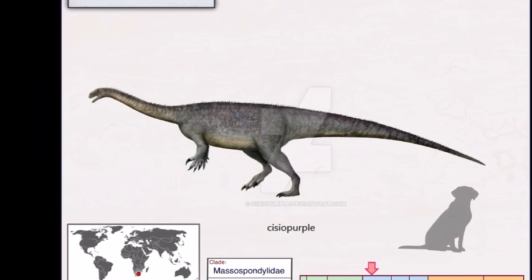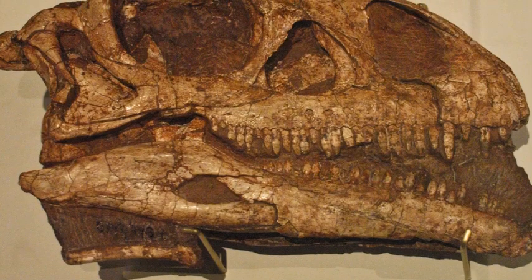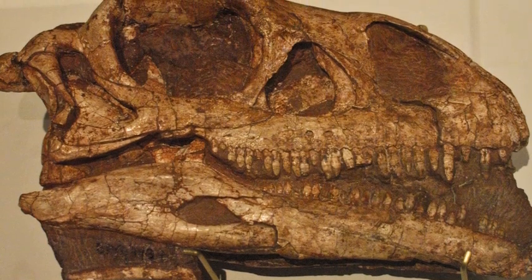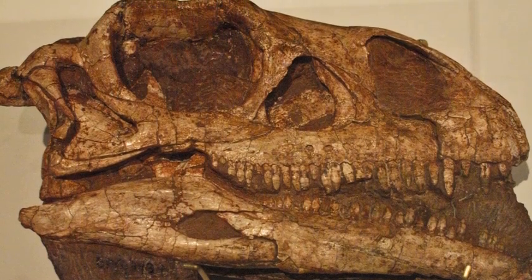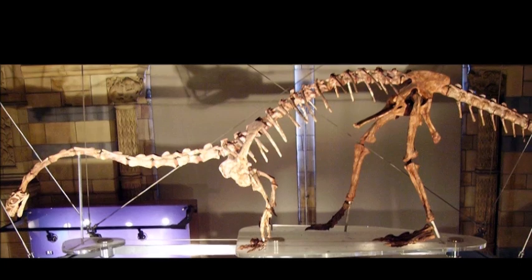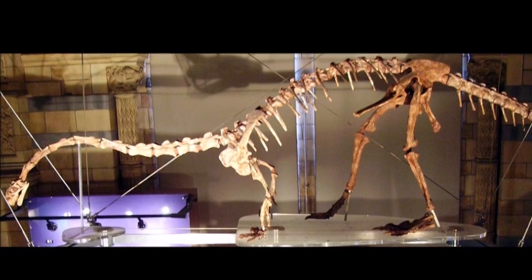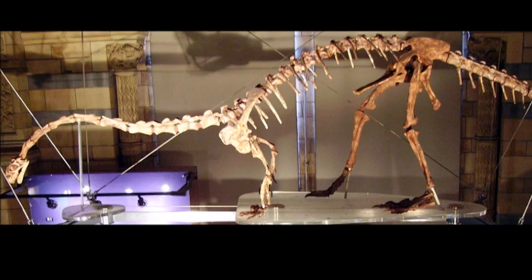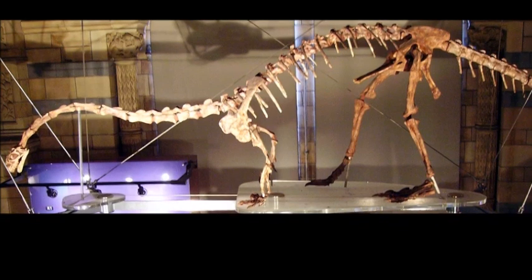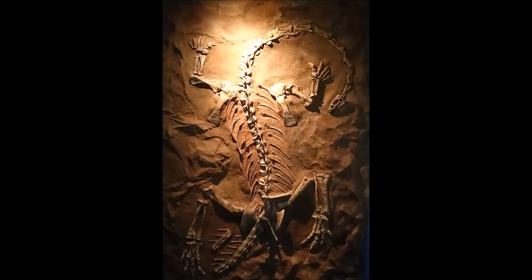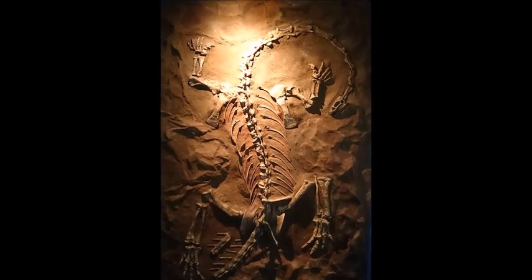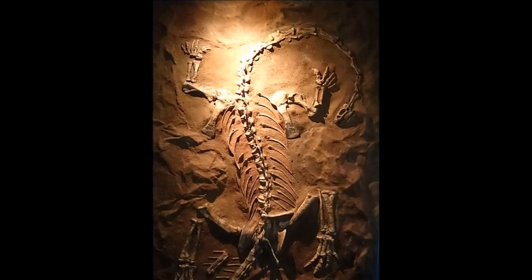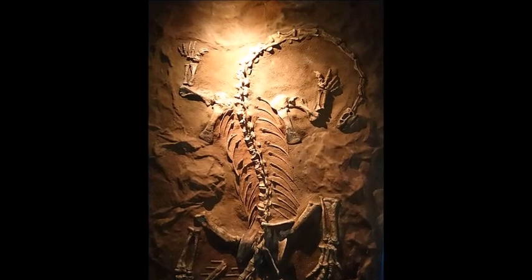The first fossil remains of Massospondylus were discovered in South Africa and described by Sir Richard Owen in 1854. Massospondylus is known from 80 partial skeletons and is therefore one of the best known of the early Jurassic sauropodomorphs. Its fossil remains have been discovered in different locations in Southern Africa, including Lesotho, Namibia and Zimbabwe. Some prosauropod fossil remains discovered in North America were once thought to belong to this genus but have since been assigned to other genera.